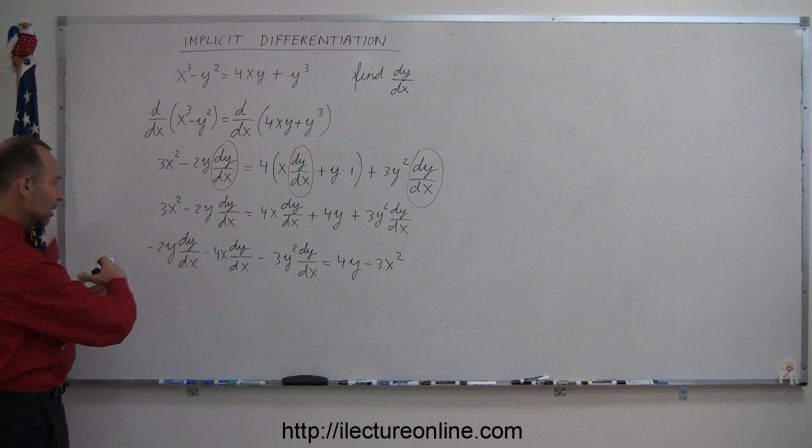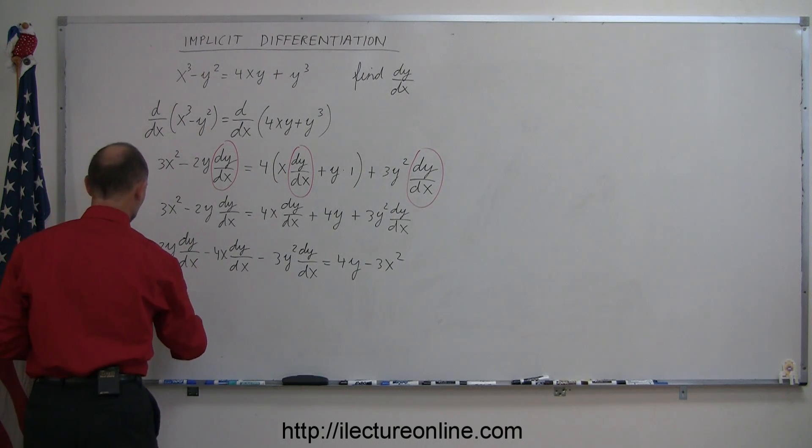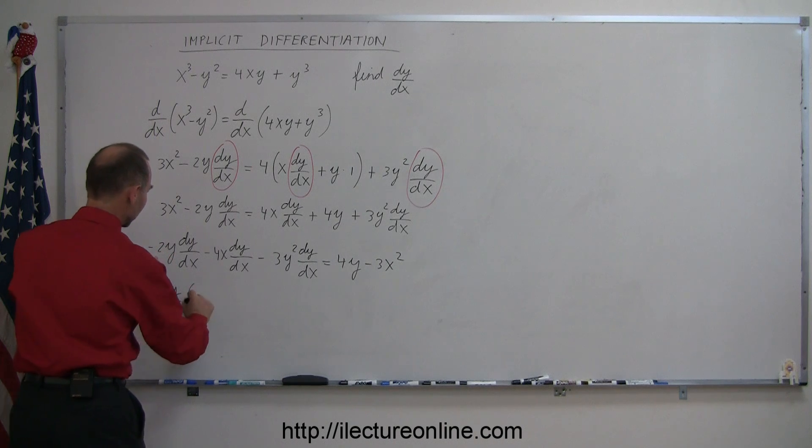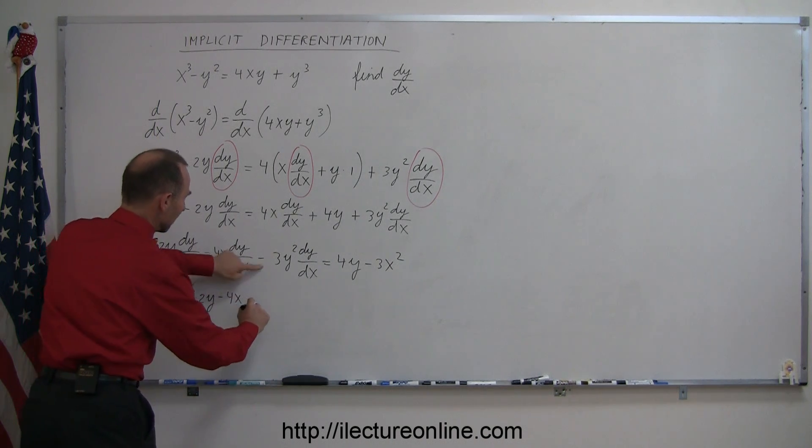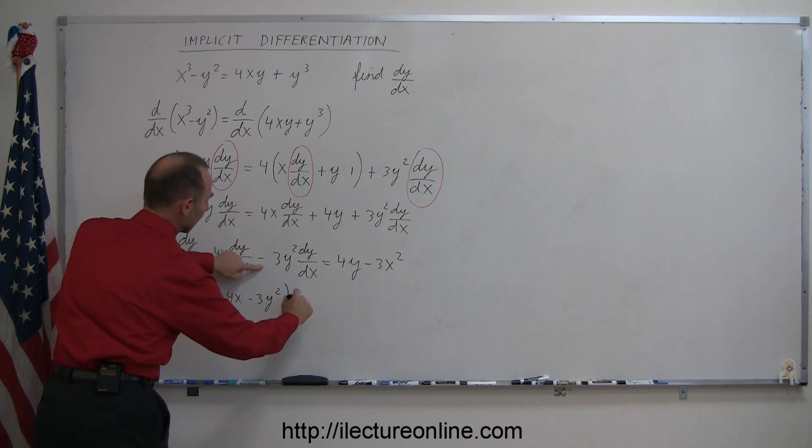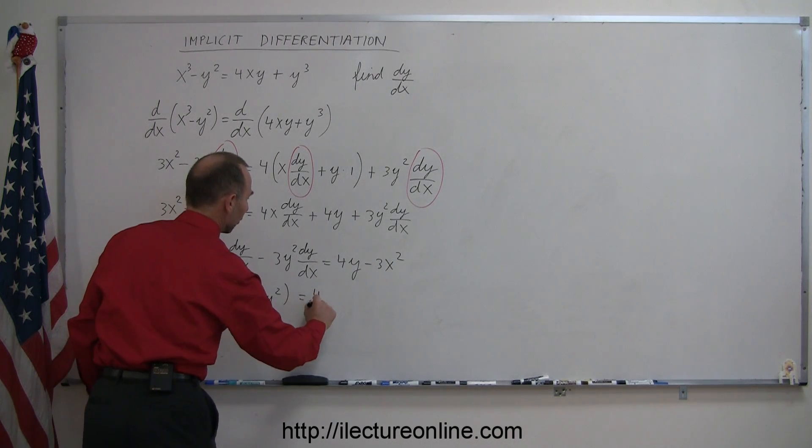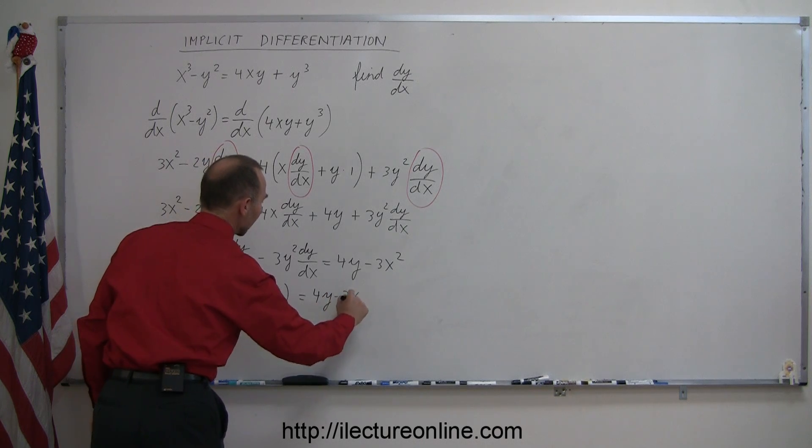Now on the left side we can factor out a dy/dx. So we have dy/dx times, we have a minus 2y, minus 4x, and a minus 3y². That equals 4y minus 3x².